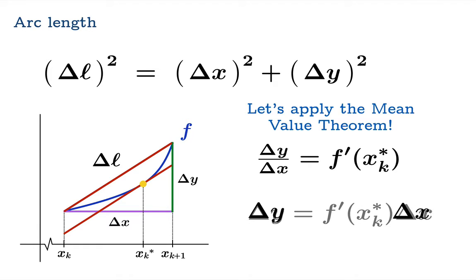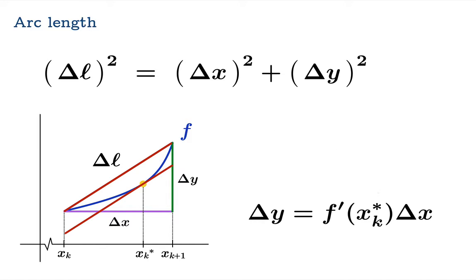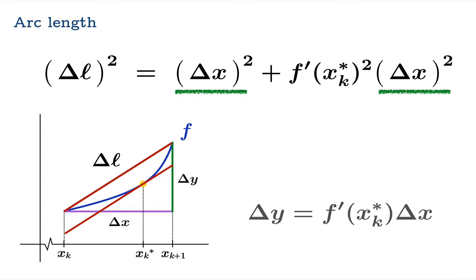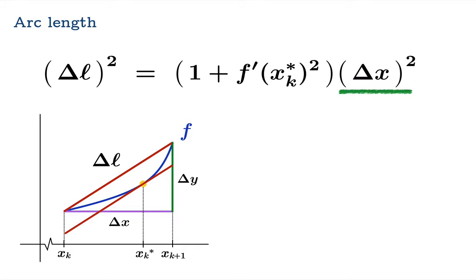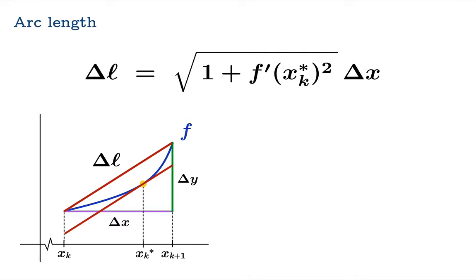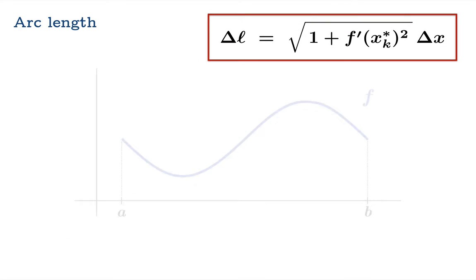Now if we solve for delta y, we get this expression here, which we could then substitute back into our original expression from the Pythagorean formula. Now there's a common delta x squared, which we can factor out, and now we can take the square root of both sides, and here is an expression for delta L.